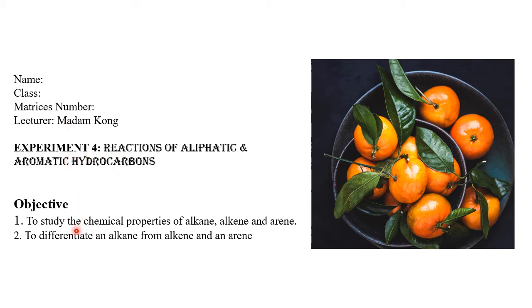The objectives of today's lesson are: number one, to study the chemical properties of alkane, alkene, and arene — arene refers to aromatic compounds. Number two, to differentiate alkane from alkene and arene.